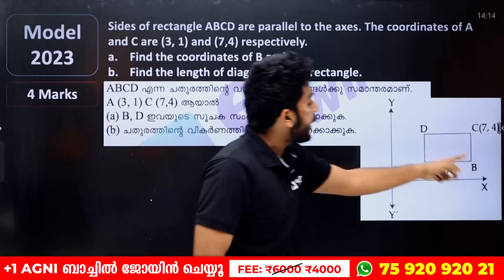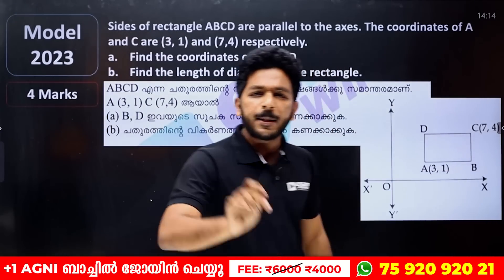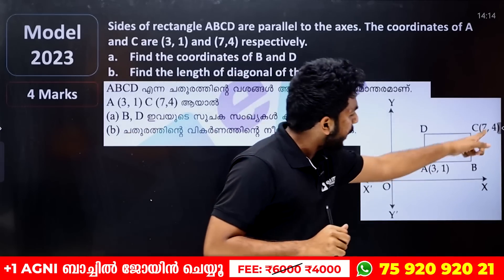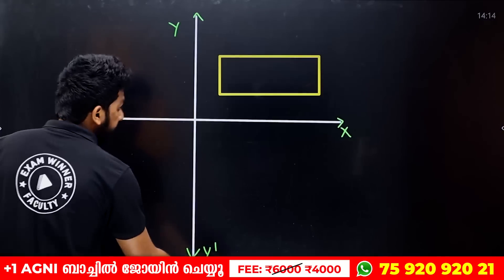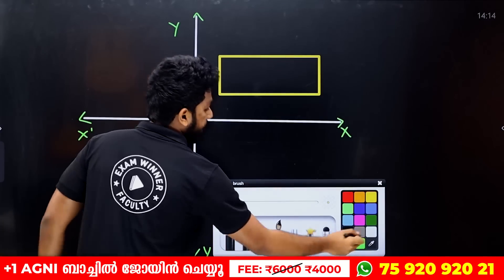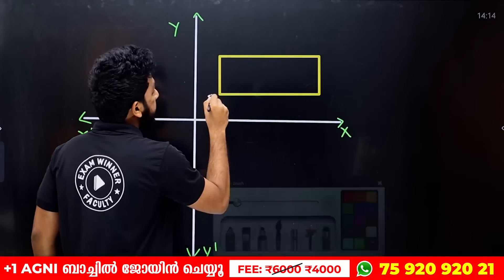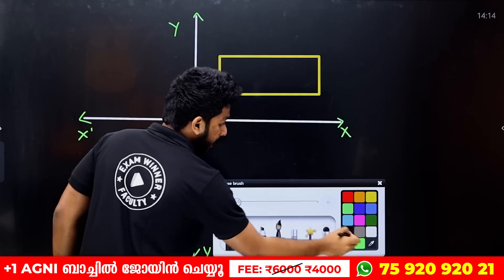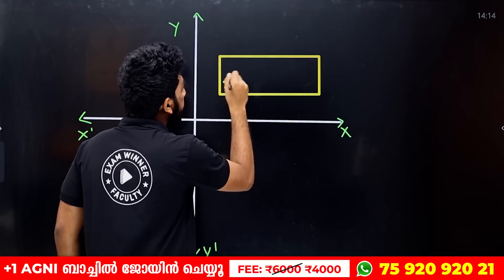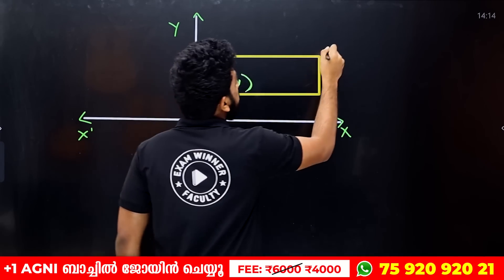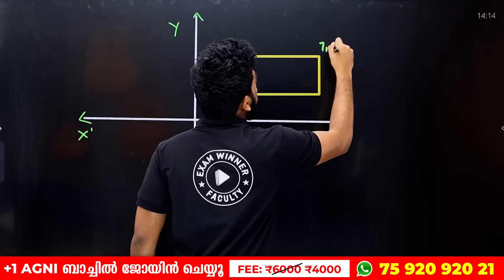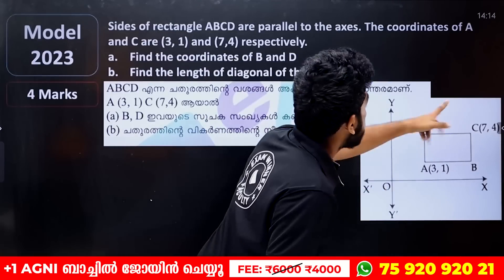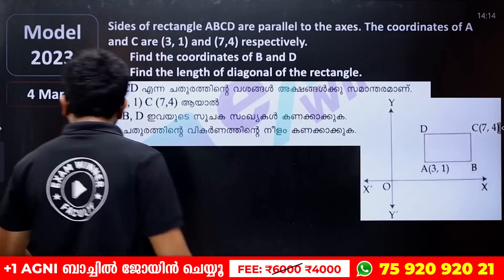Find the other two coordinates of the rectangle — it is very simple. Here, we are given A as (3, 1) and C as (7, 4). If you take this diagram, A and C are the two known vertices.